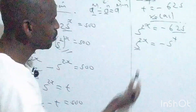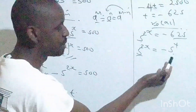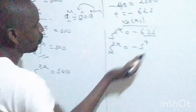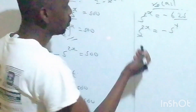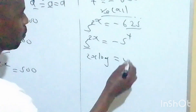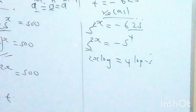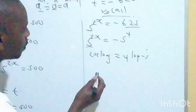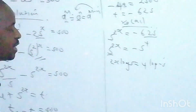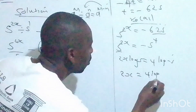As you can see, the bases are not the same because one is negative and one is positive, so you cannot compare the powers directly. We introduce logarithms. Taking log of both sides: 2x log 5 is equal to log of negative 5^4, which gives 4 log of negative 5. So 2x equals 4 log(negative 5) over log 5.